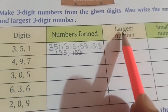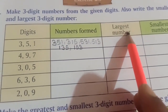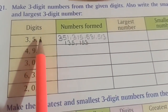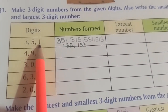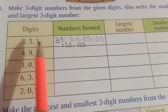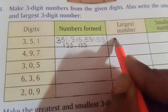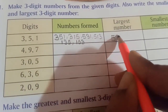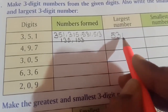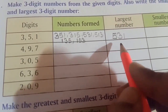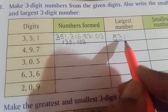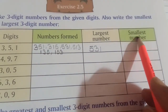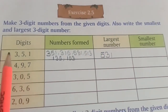Now for the largest number, we arrange the digits 3, 5, 1 in descending order. Five is the greatest digit, so we write 5 first, then 3, then 1. So 531 is the largest number. For the smallest number, we arrange in ascending order. One is the smallest, so we write 1 first, then 3, then 5. So 135 is the smallest number.